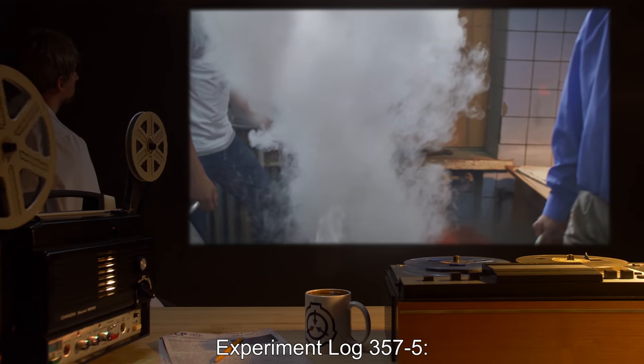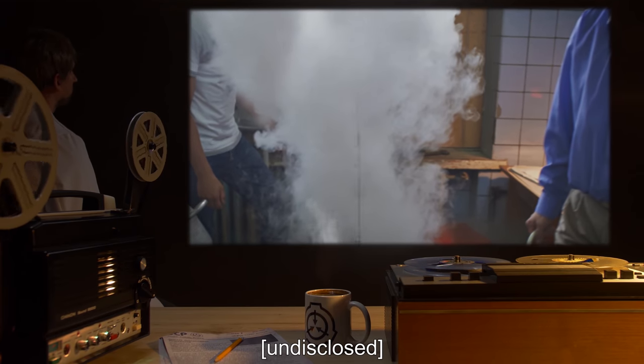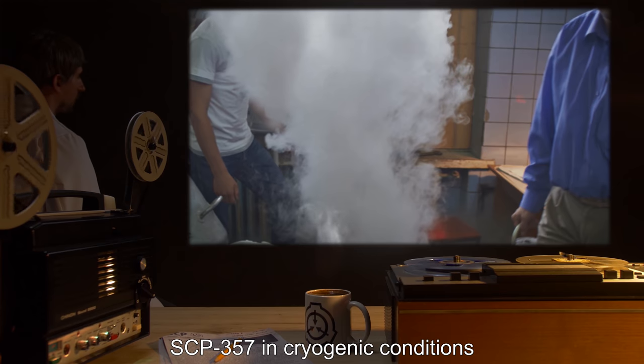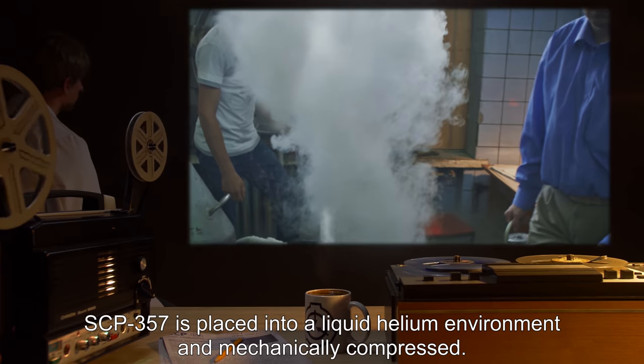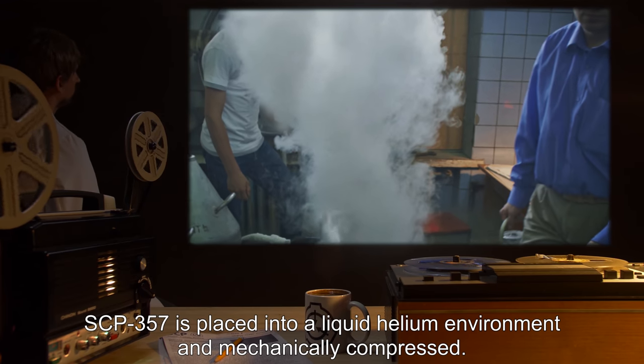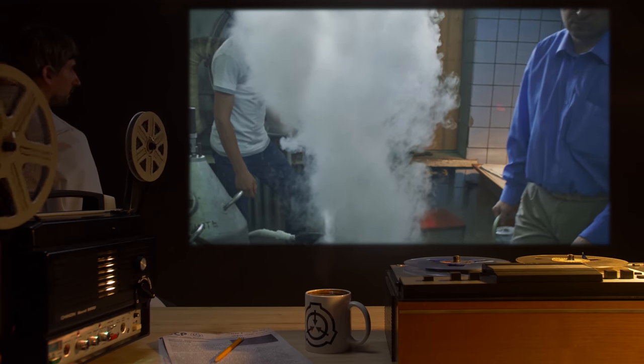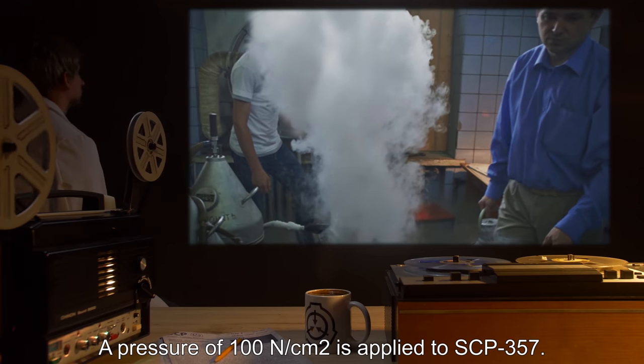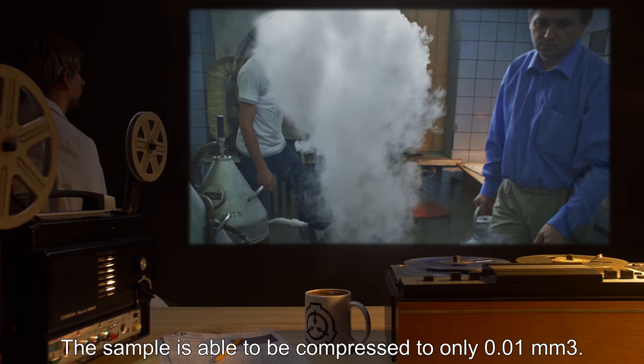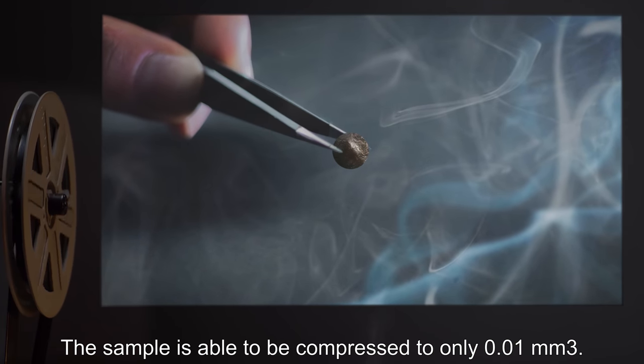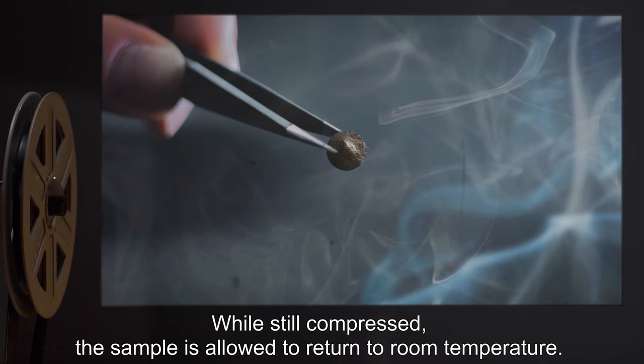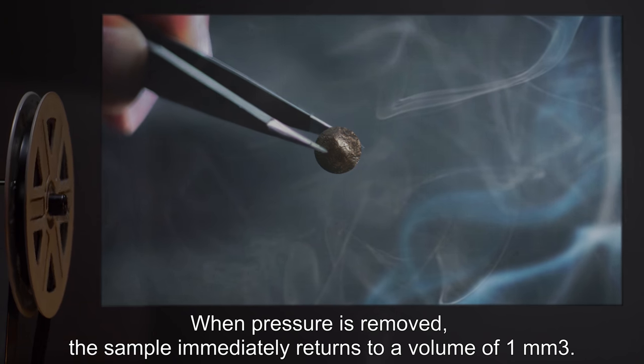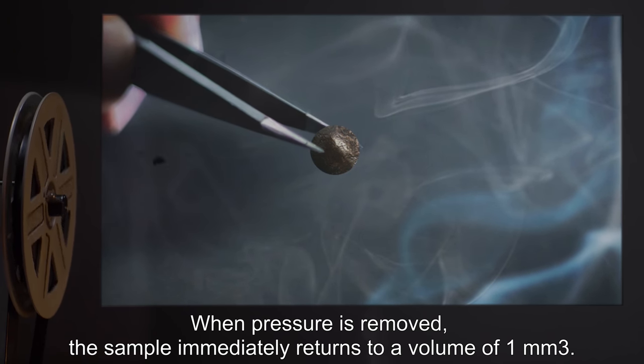Experiment Log 357-5. Date: Undisclosed. Subject: SCP-357 in cryogenic conditions. Procedure: SCP-357 is placed into a liquid helium environment and mechanically compressed. Details: A pressure of one hundred newtons per centimeter squared is applied to SCP-357. The sample is able to be compressed to only 0.01 millimeters cubed. While still compressed, the sample is allowed to return to room temperature. When pressure is removed, the sample immediately returns to a volume of one millimeter cubed.